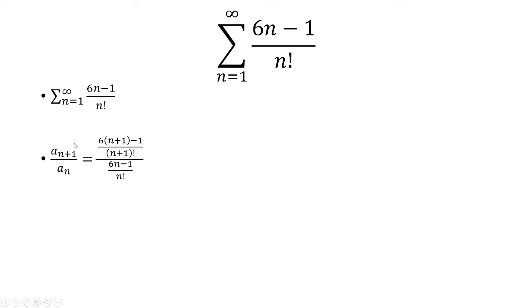In order to figure this out, we have to use a ratio test. So let's take the n plus first term divided by the nth term. With the n plus first term, we're going to replace n with n plus 1.